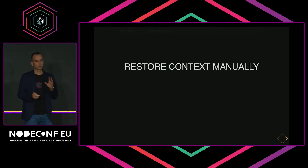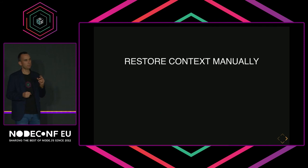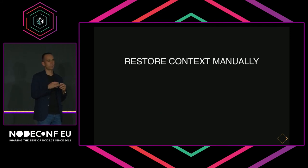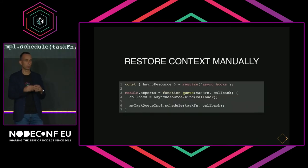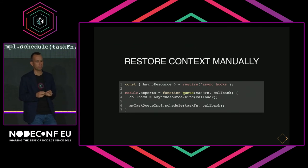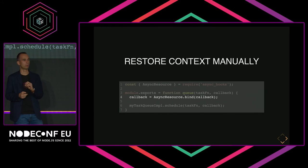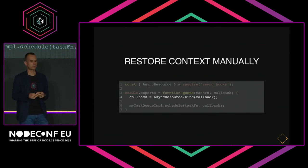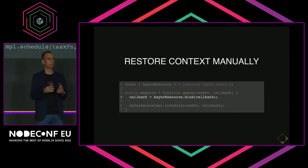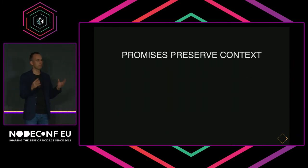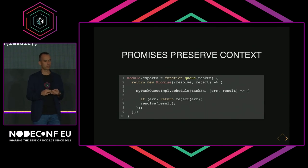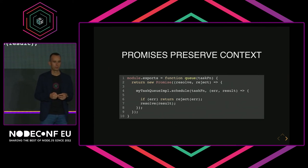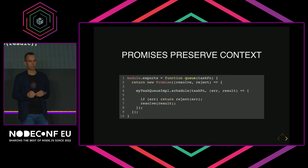This is very low level. What is more important: AsyncResource gives you an API to restore context manually. For example, if you were building a callback-based task queue and want to make sure it works with Async Local Storage properly, all you need to do is call AsyncResource.bind on your callback — this converts it into a different callback function that restores the context for you. And then continue with your implementation as before. What's even better: if you are using promises, you get all of this for free. If you wrap your implementation with the usual new Promise resolve/reject wrapper, the context will be restored for you automatically.